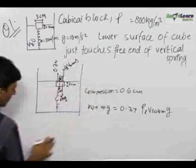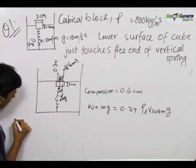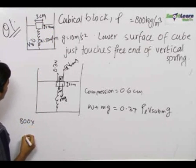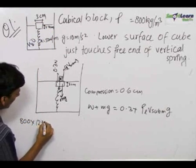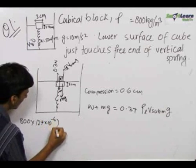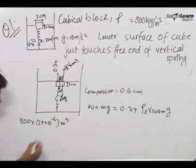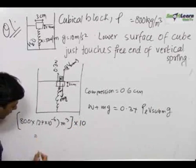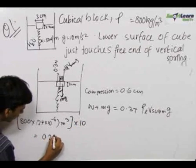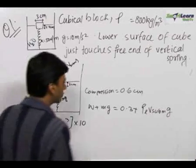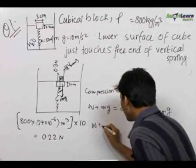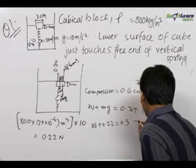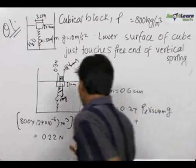Let us calculate mg first, the mass of the object is equal to the density into the volume that is 800 into volume is 27 into 10 raised to minus 6 meters cube. This is the mass of the object multiplied by 10. So this gives us the weight of the object that is equal to 0.22 newtons.